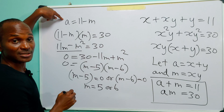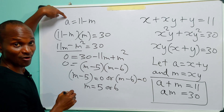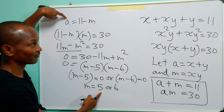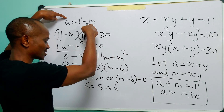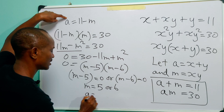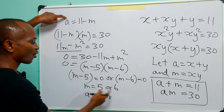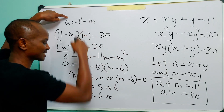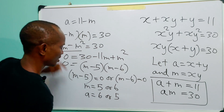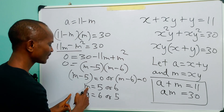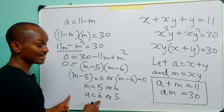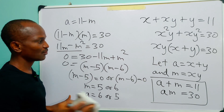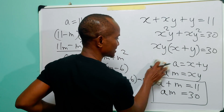Now we go back to the equation a equals 11 minus m to find the values of a. When m is equal to 5, a is equal to 11 minus 5, which is 6. And when m is equal to 6, a is equal to 11 minus 6, which is 5. So we have two pairs: when m equals 5, a equals 6, and when m equals 6, a equals 5.